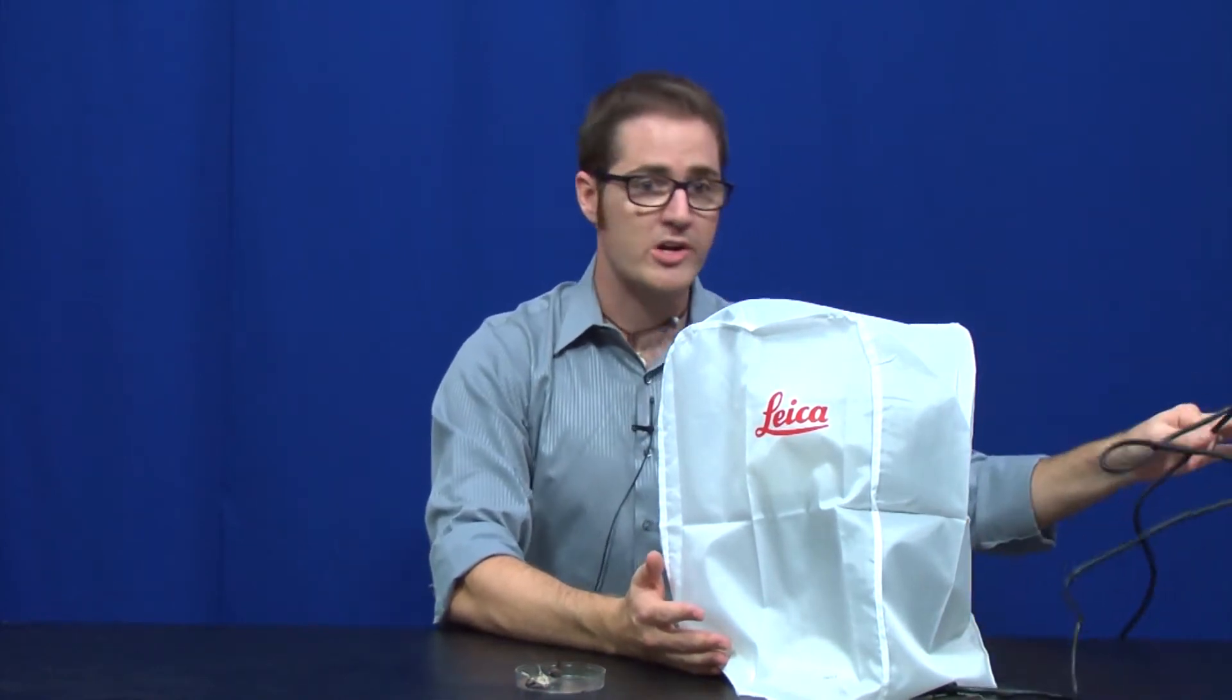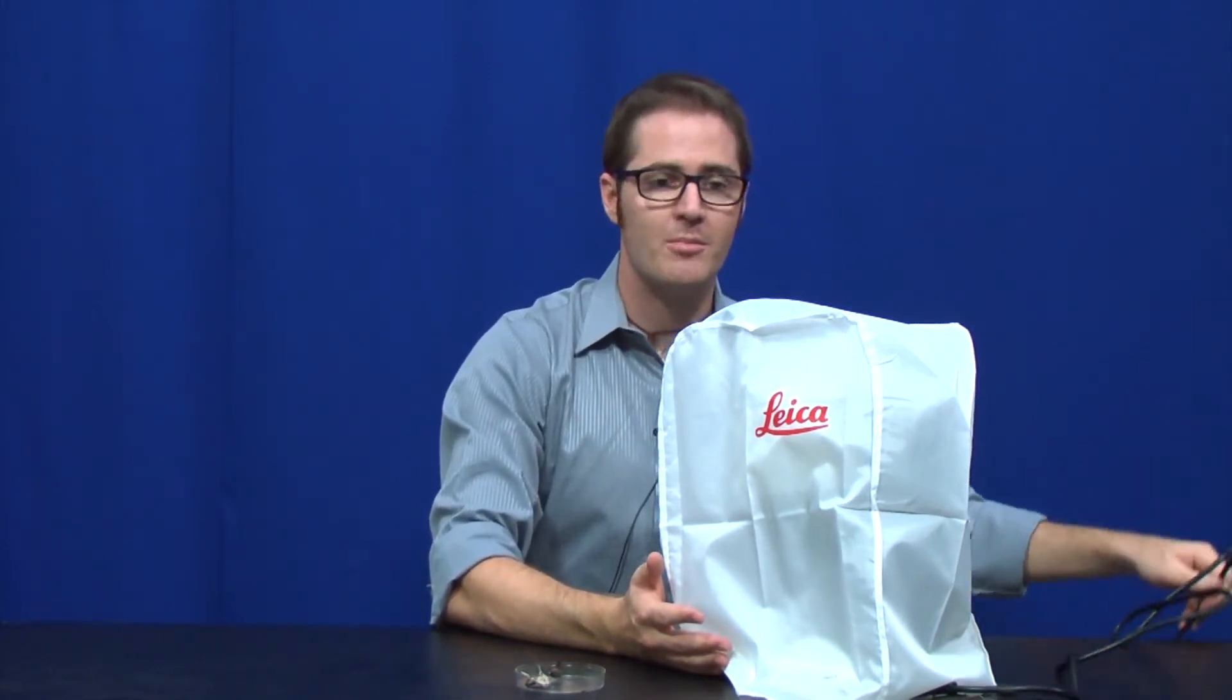I have the stereo microscope here. This is what it's going to look like when you pull it out of the cabinet. It's going to have the dust cover on. This cord will actually be wrapped up. I've already plugged it in down below the table here.